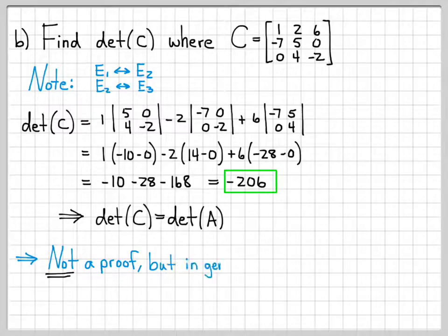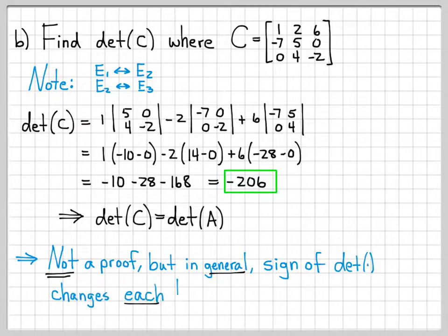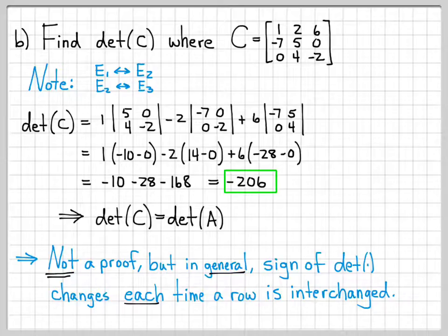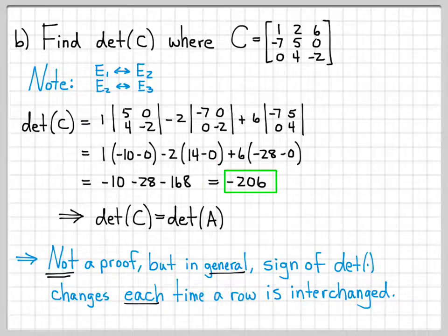This is not a proof — we've just shown examples of what happens when you interchange rows of matrices. In general, the property we're demonstrating is that the sign of the determinant changes each time a row is interchanged. One row interchange: multiply by negative one. Two row interchanges: multiply by negative one twice, giving positive one. Three row interchanges: negative one to the third power is negative one. Four row interchanges: negative one to the fourth is positive one.